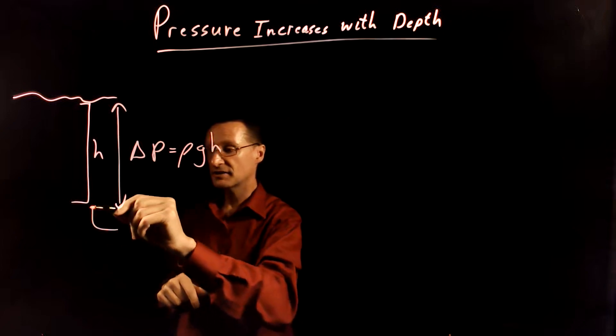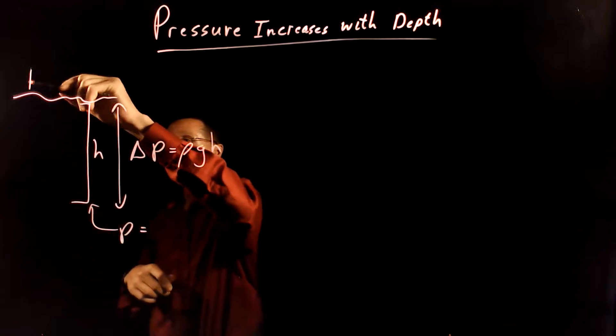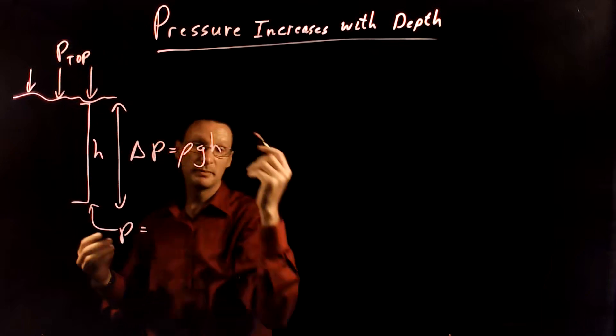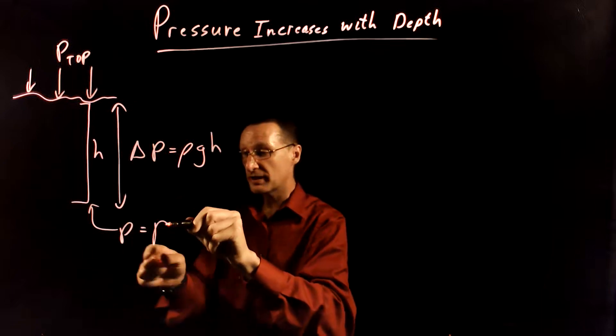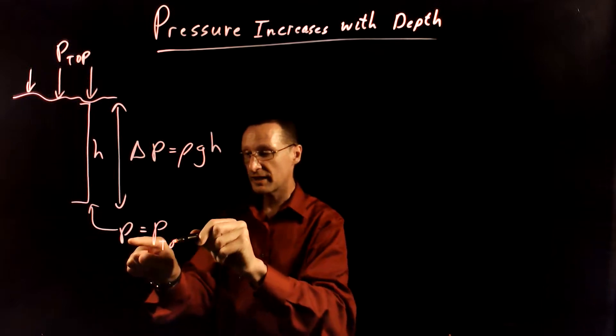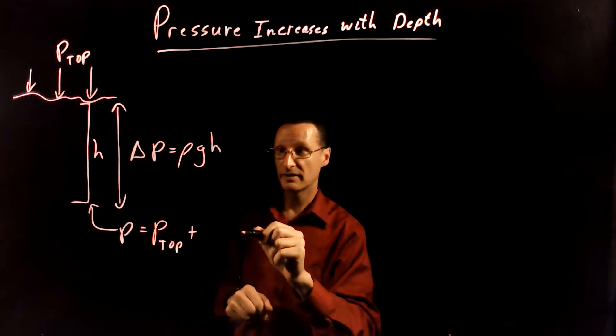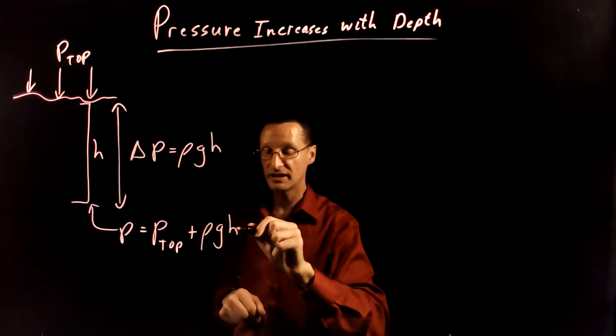Now if you want to know the pressure here, the pressure is just the pressure at the top because there's some pressure at the top, maybe from air pressure or something like that. And so the total pressure here is going to be the pressure at the top plus the amount that it has increased because it's deeper. And so that's just going to be ρgh.